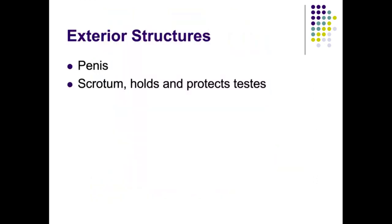The external structures of the male reproductive system are the penis and the scrotum. The penis's sole purpose is essentially to deliver semen as close as possible to the egg. The scrotum is responsible for holding the testes outside of the body so that the temperature of the testes is effectively maintained for sperm production.